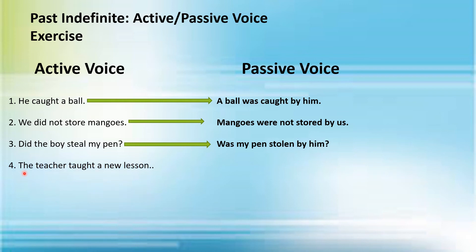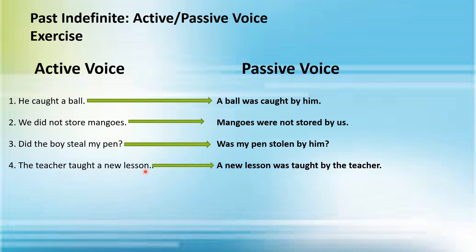Number four: 'The teacher taught a new lesson.' 'A new lesson' is the object, so it will come at the start. You add 'was' because it follows the rule — 'taught' is the third form of the verb. The passive voice is: 'A new lesson was taught by the teacher.'